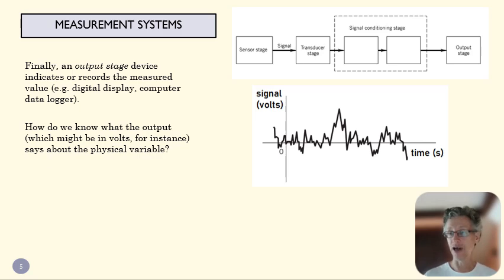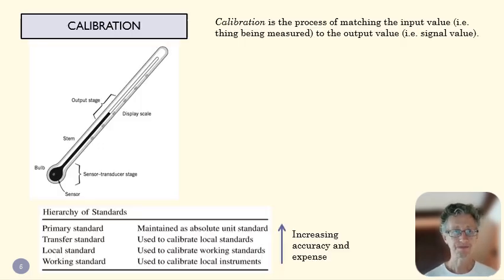But one of the things that we need to know is, okay, now I've got a voltage, right? My AFM, say it produces a set of changing voltages because these diodes light up in different ways. How do I actually know what that means? And that process is called calibration. And calibration means that we're going to try and match an input value, that is whatever we're measuring, let's say in this case, a temperature to an output value.